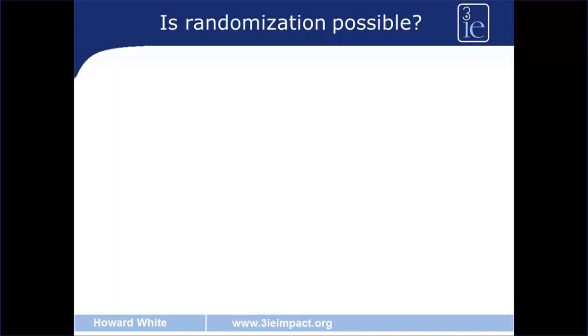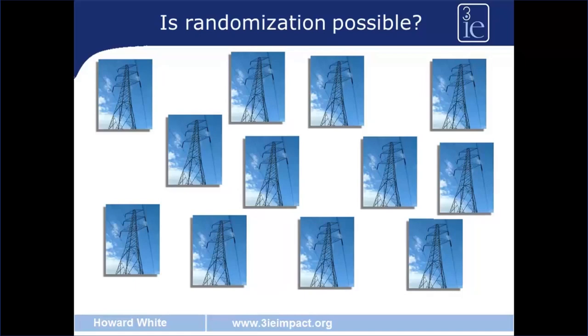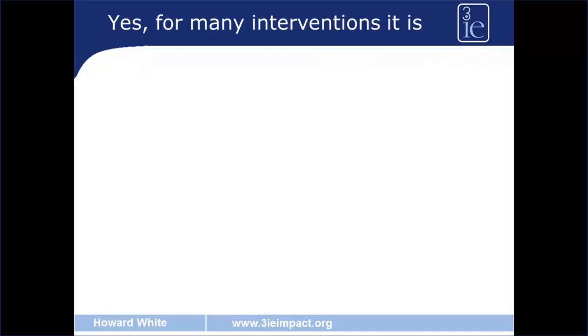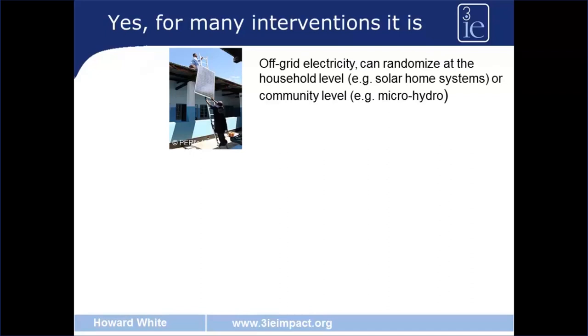The first question we'll ask ourselves is: is randomisation possible? Can we randomly assign the location of infrastructure investments? And the answer is yes we can. In many cases we can randomly assign infrastructure interventions. Take the example of off-grid rural electrification. Solar home systems can be randomised at the household level or the community level, whereas other off-grid interventions such as micro hydro can be randomised at the community level.